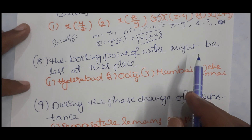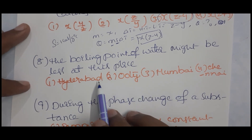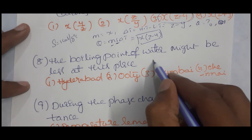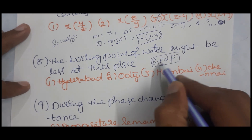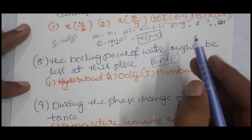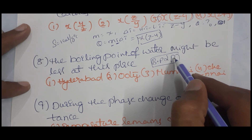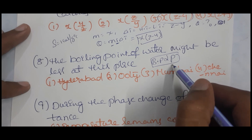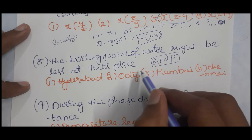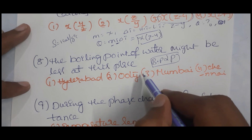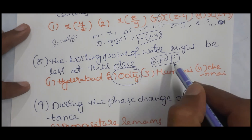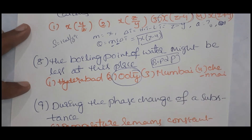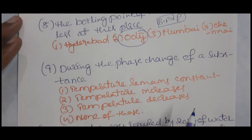The boiling point of water is directly proportional to pressure. When pressure increases, boiling point increases; when pressure decreases, boiling point decreases. With increasing height from sea level, atmospheric pressure decreases, so the boiling point of water also decreases. That is why at higher places like Ooty, the boiling point is lower.